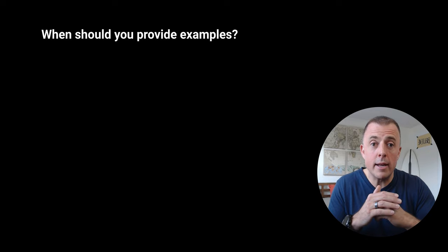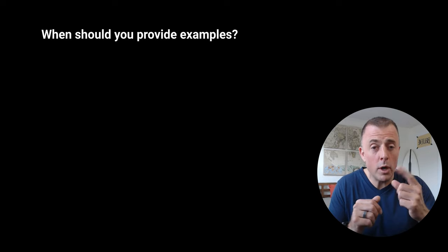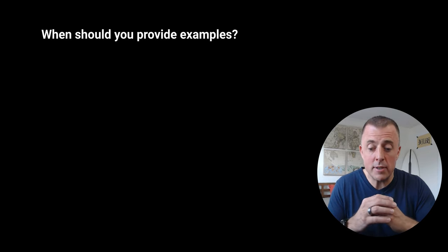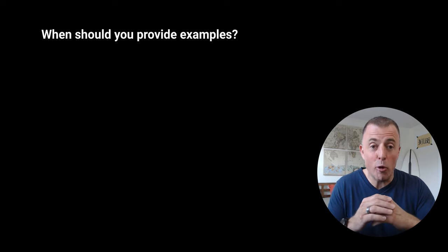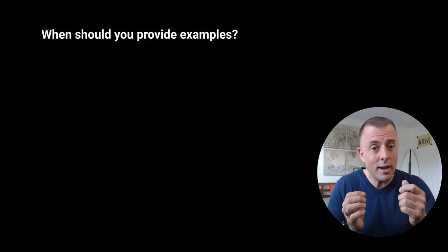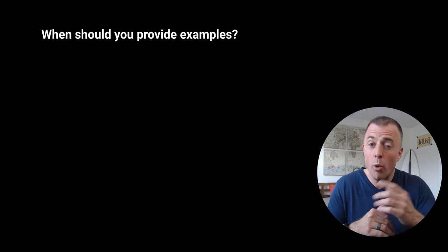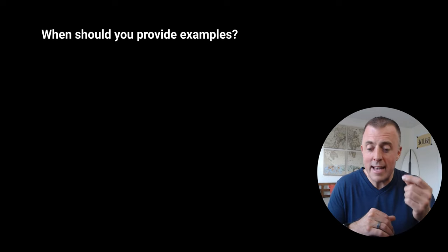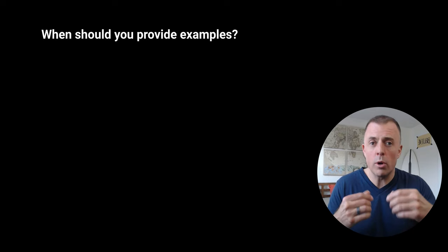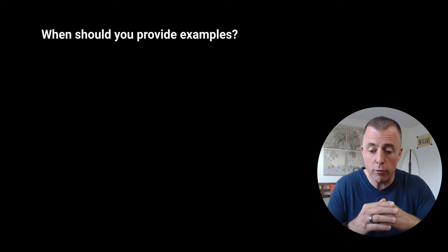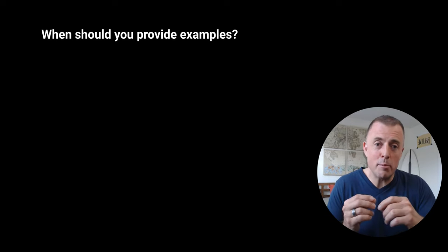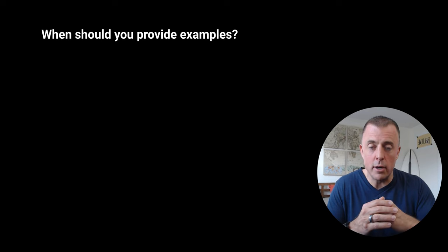So when should you provide examples? Number one: you're dealing with highly specific tasks that require a particular format or style. Two: if you've got unfamiliar concepts or requests, or this task involves a new idea or a combination of skills the model hasn't used together before, or anytime you're asking the model for something it hasn't been trained on.